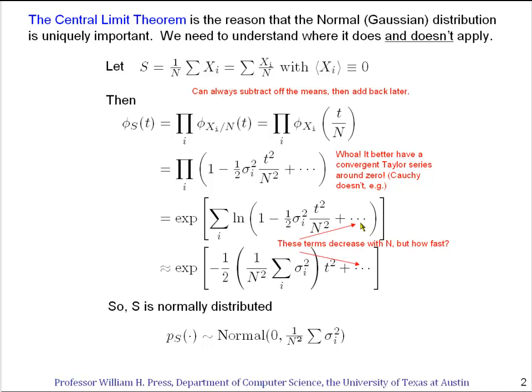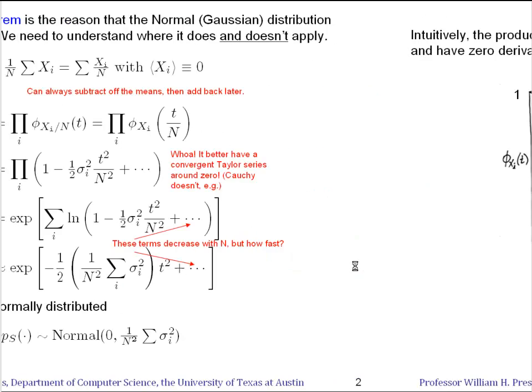We also assumed that the terms became negligible, that they decrease with n. But how fast do they decrease? If the characteristic function falls off only very slowly, the series might be convergent but only very slowly convergent, then we'd better worry about whether the central limit theorem actually applies.